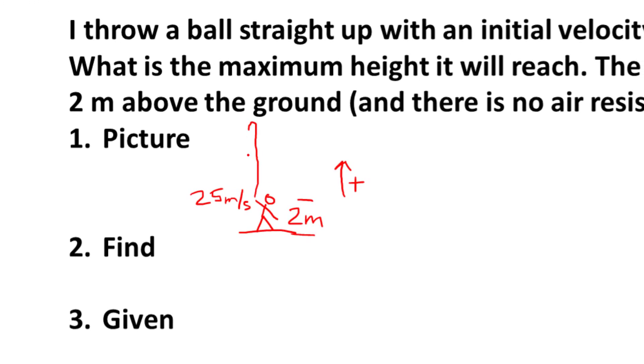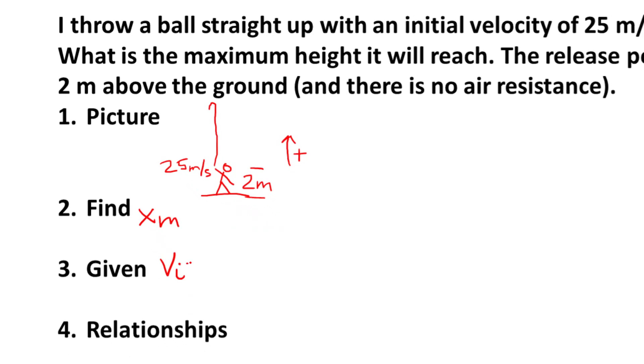So here's my drawing: throwing up, up, up, up to the very top. My release velocity, 25 meters per second. I'm establishing up as being my positive direction, and I know I released it 2 meters above the ground. So what are we trying to find here? We're trying to find the maximum position. And we're given a couple of things: the initial velocity is 25 meters per second, and the initial position of 2 meters.